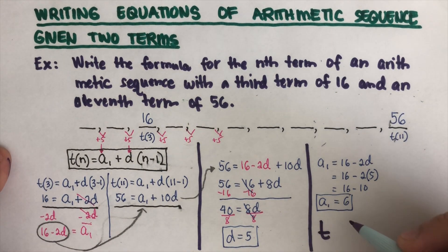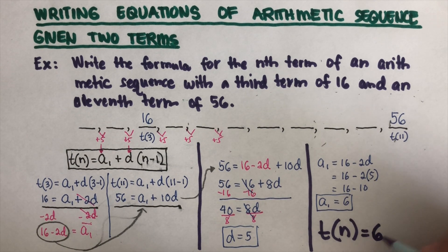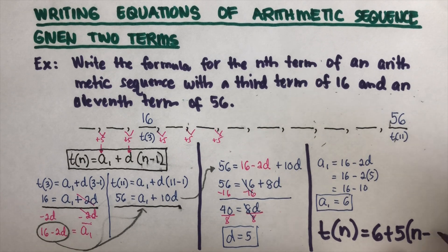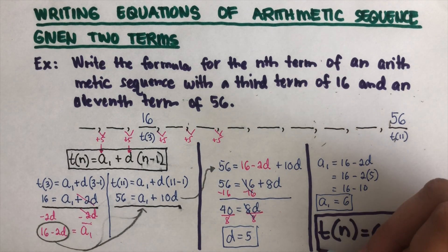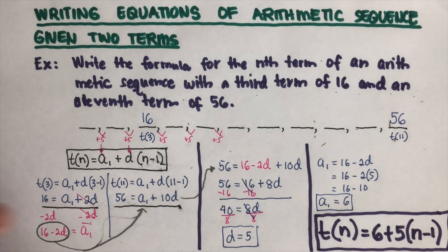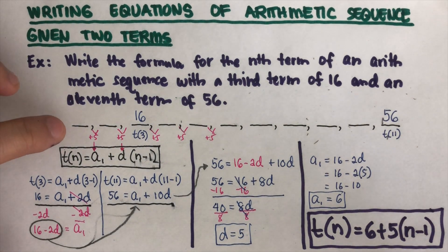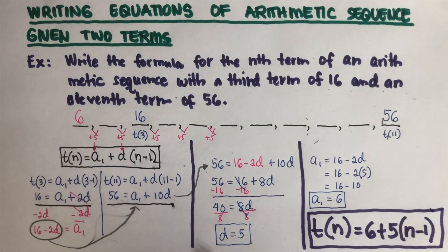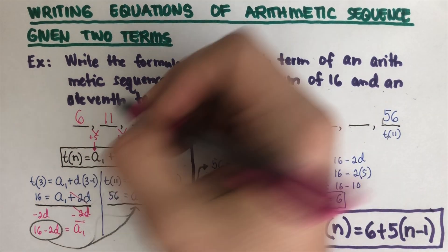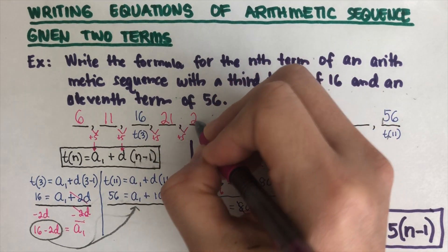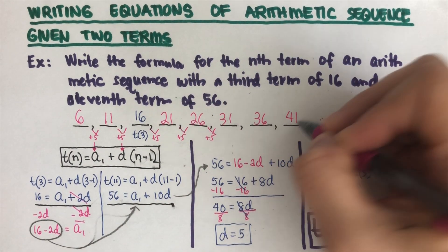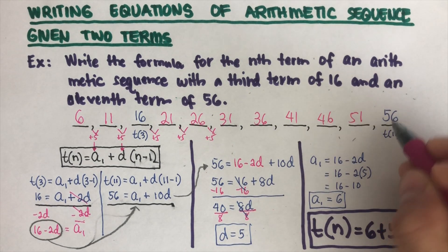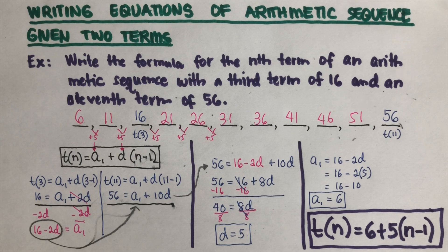The equation for this arithmetic sequence is t(n) = 6 + 5(n − 1). This makes sense: the first term is 6, and adding 5 each time gives 6, 11, 16, 21, 26, 31, 36, 41, 46, 51, 56 — confirming the 11th term is 56. Problem solved!